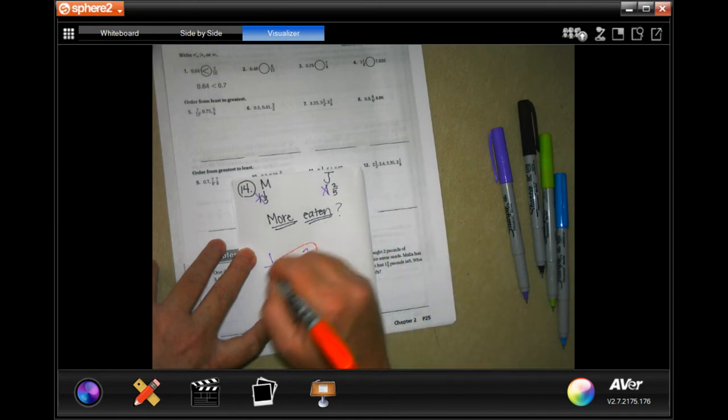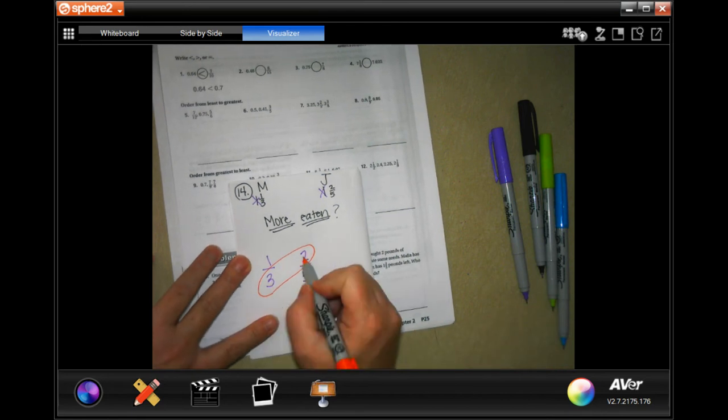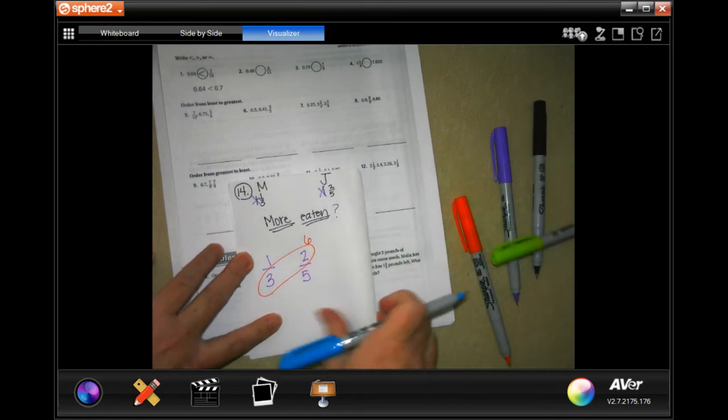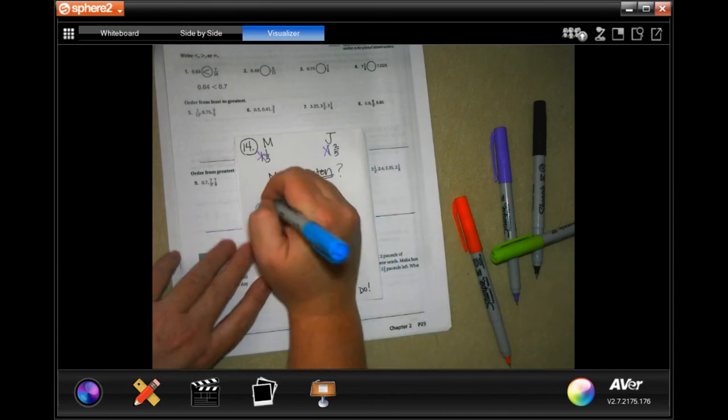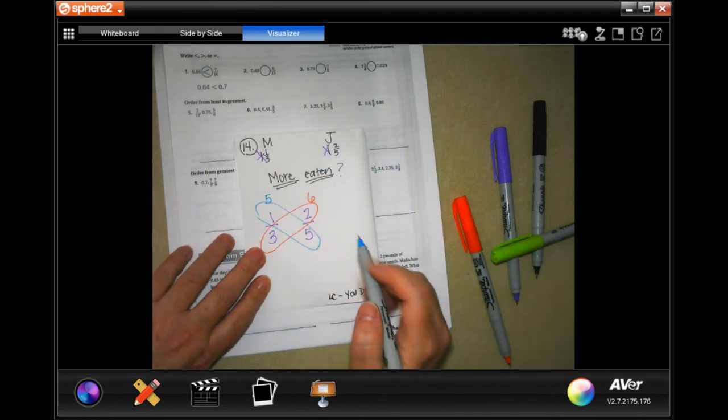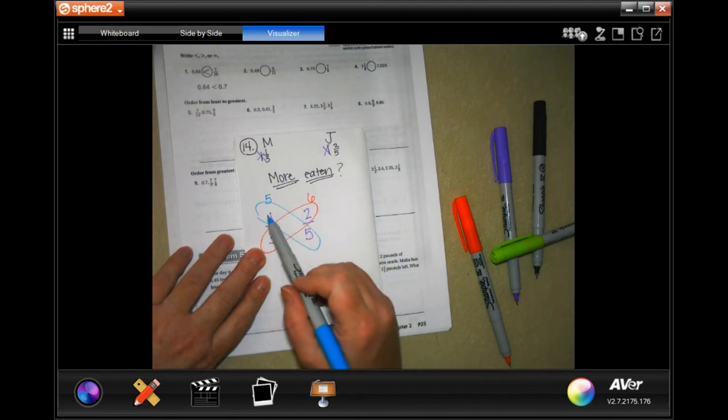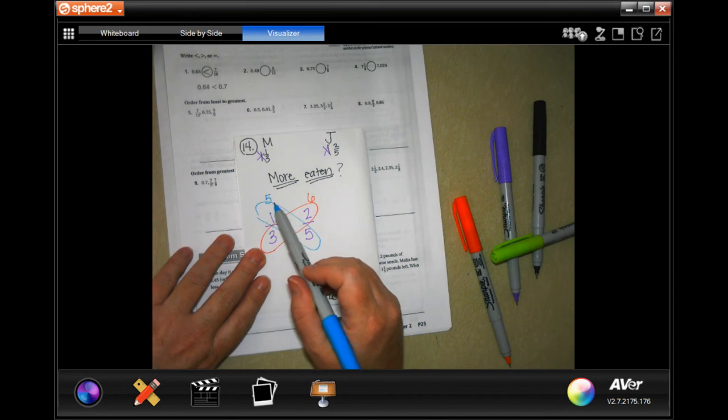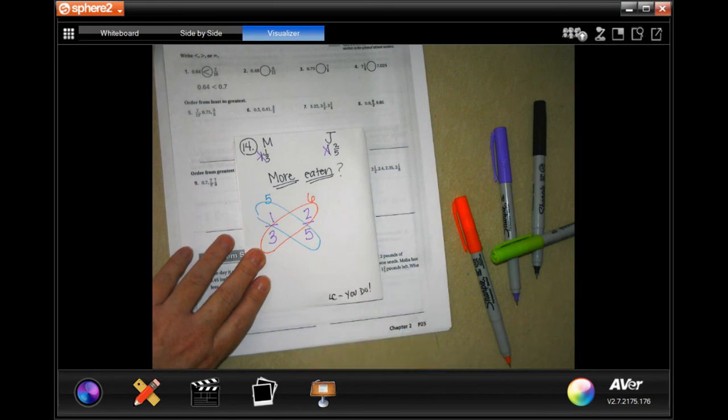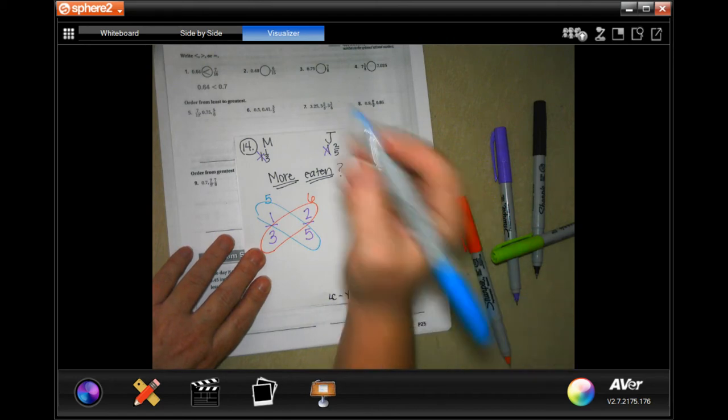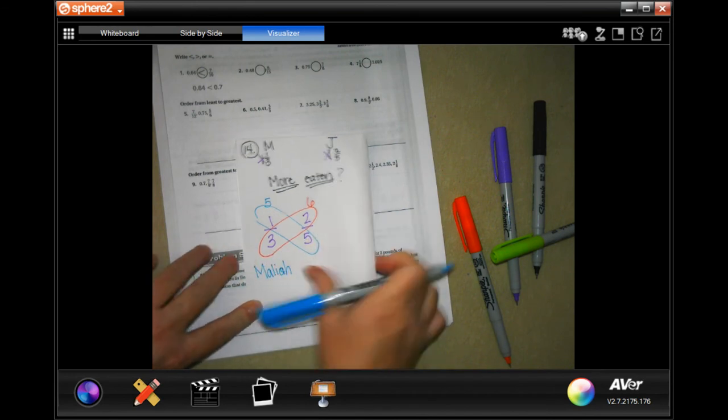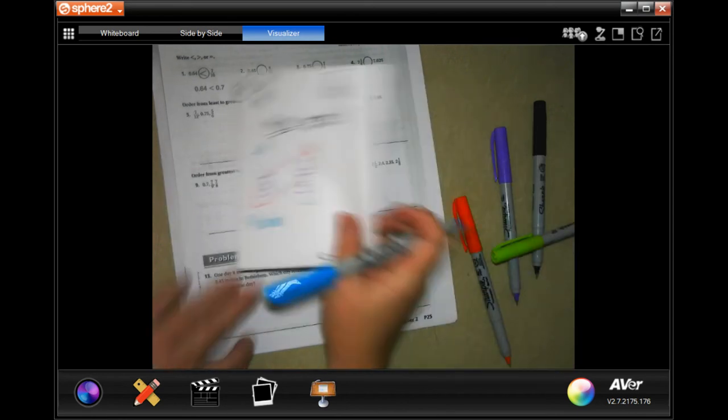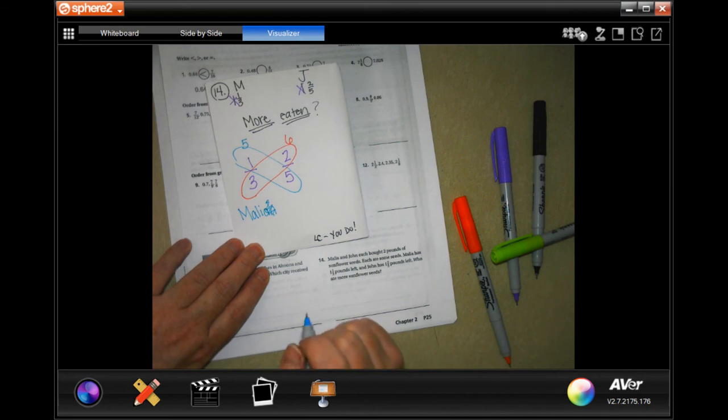So, I'm going to go like this and 3 times 2 is 6. Now, I'm going to do it the other way. You see, I drew a butterfly. 5 times 1 is 5. So, that means that this one is bigger than this one because 6 is bigger than 5. Now, it wants to know who ate more. Well, that means the person that has the least left over is the person who ate more. So, that is going to be Malia. My paper is moving on me. No, I spelled it wrong. No H. Sorry about that.